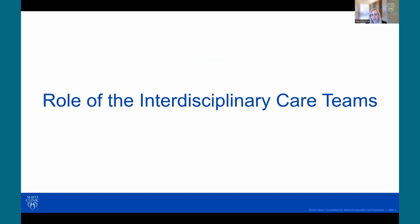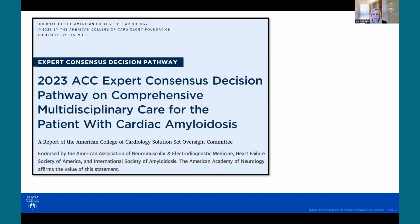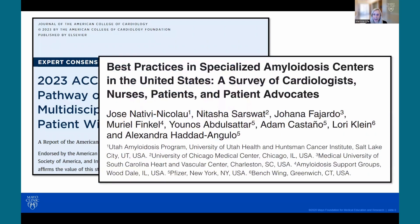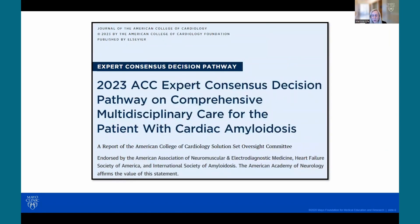Now that we know interdisciplinary care teams are important, what are their specific roles? Throughout my talk, I'm going to be referencing two documents: the 2023 ACC expert consensus decision pathway on the comprehensive multidisciplinary care of the patient with cardiac amyloid, and the best practices in specialized amyloidosis centers, a qualitative survey that interviewed different participants within amyloidosis centers of excellence. This ACC expert consensus document really focused on optimization of multidisciplinary and collaborative care, highlighting that patients with cardiac amyloid can have extra-cardiac manifestations involving the nervous system, GI tract, kidneys, and musculoskeletal system — all things that can increase morbidity and mortality.